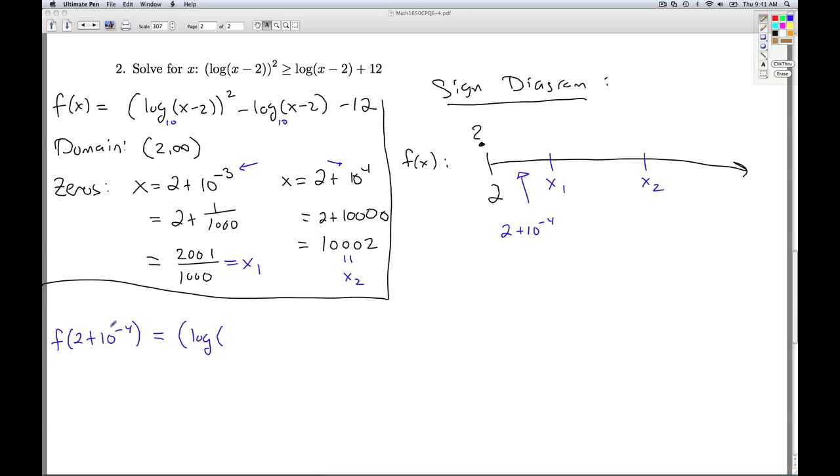when I plug that in, look what happens. I have two plus ten to the negative fourth minus two. That's going to give me ten to the negative fourth squared minus log of, I plug that in here, subtract two, ten to the negative fourth minus twelve. And what's log of ten to the negative fourth? Negative four. And so when you sort that out, you get sixteen plus four minus twelve. That's a positive number.